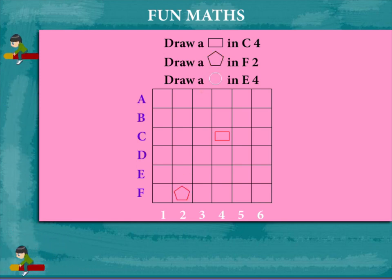This time a circle in E4. Once again, E row and column 4. That's fun.